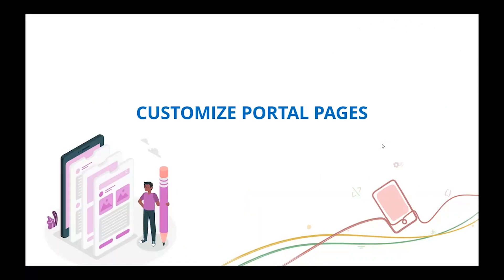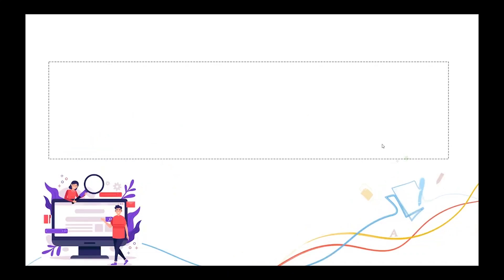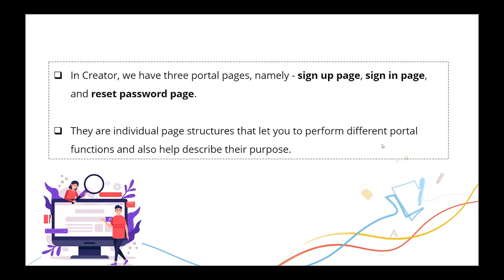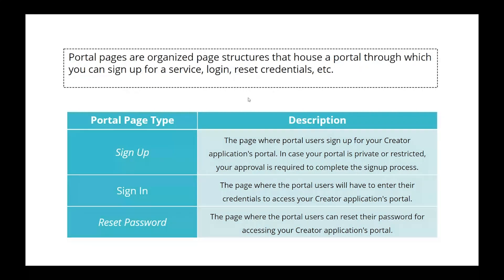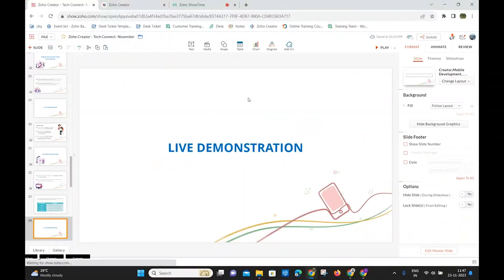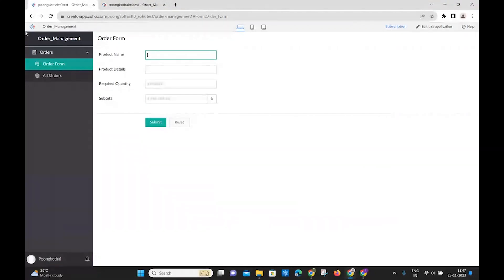Moving to Customizing Portal Pages. Creator portals have three customizable pages: sign-in, sign-up, and reset password. These pages serve as the main interaction point for users. Organizations can apply branding — custom colors, images, and styling — to these portal pages to make them visually appealing. A demo shows how the employee management portal pages have been customized.